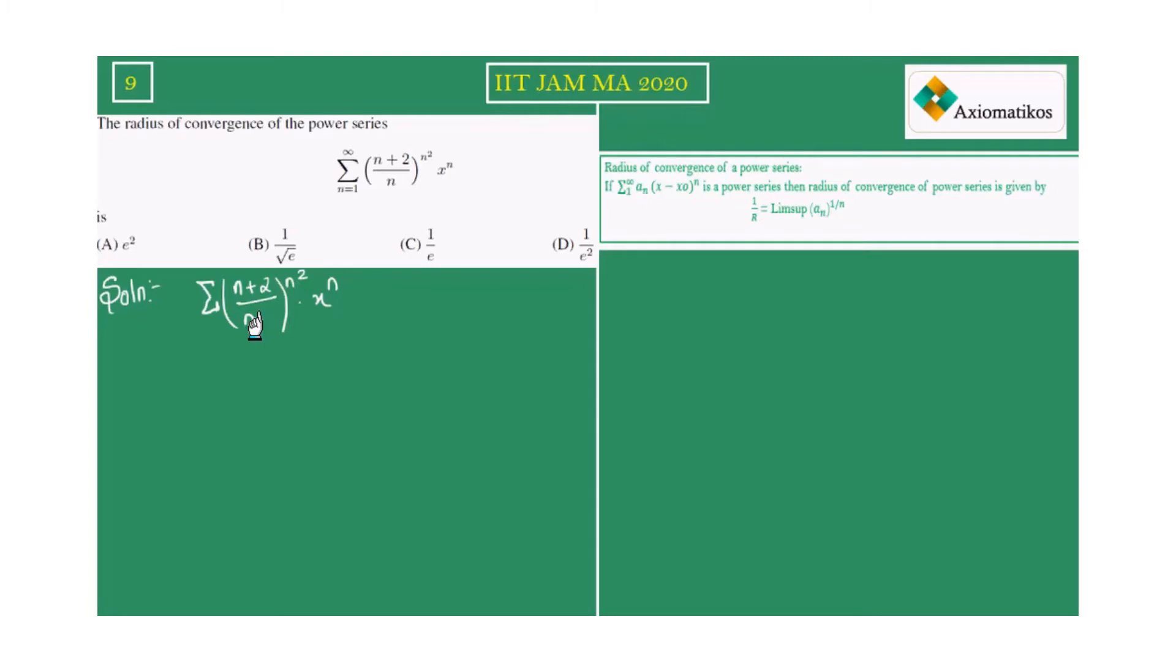Now from this note, what we are going to determine is a_n. So this is our a_n. For this power series, if we have a_n like this, it is n².